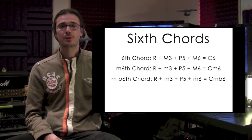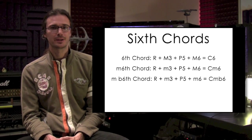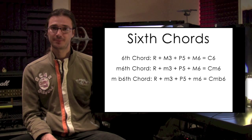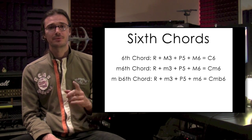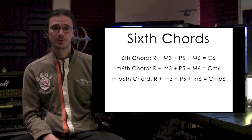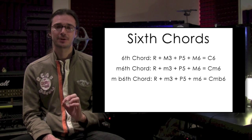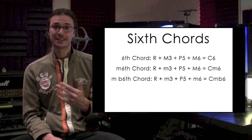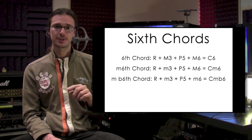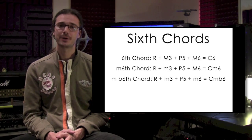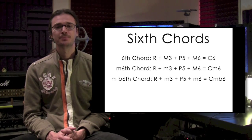One exception: if you add the 6th (same as the 13th), you just call it C6th rather than C add13. C6th is C, E, G plus an A (the 6th). For minor, you can have C, E-flat, G plus A — that's C minor 6th. There's also a chord called minor flat 6th: same minor chord C, E-flat, G, but with an A-flat instead. This is important because most minor chords in theory call for a flat 6th rather than a natural 6th.